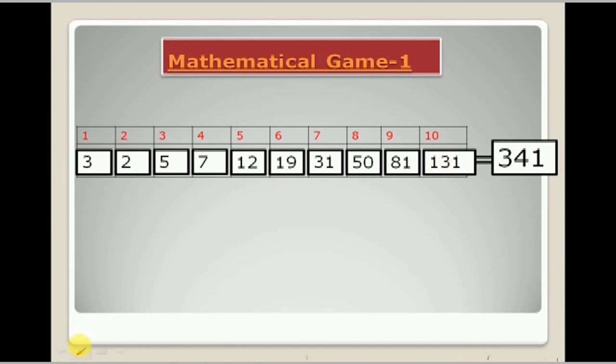19 and 31 becomes 50, 31 and 50 becomes 81, 50 and 81 becomes 131. Now what you will do, you will add all these numbers which are in all these 10 boxes. Suppose 3 plus 2 plus 5 plus 7 plus 12 plus 19 plus 31 plus 50 plus 81 plus 131.